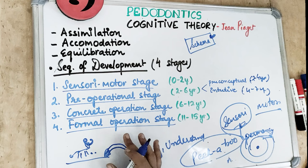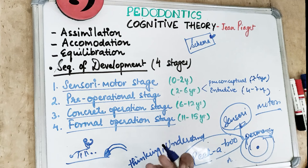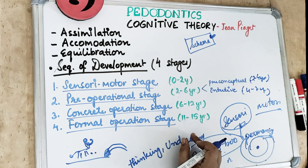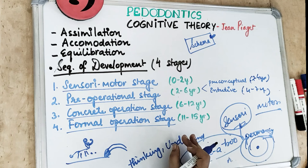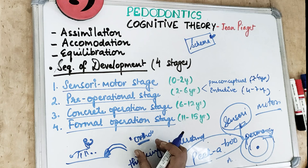The formal operational stage is from 11 to 15 years. At this stage, the child starts asking questions about things that are not physically in front of them. Thinking becomes idealistic and logical. Peer influence and abstract thinking increase significantly. This plays an important role in orthodontic treatment, because the child wants to look good, and acceptance from peers can be used as motivation for dental treatment.